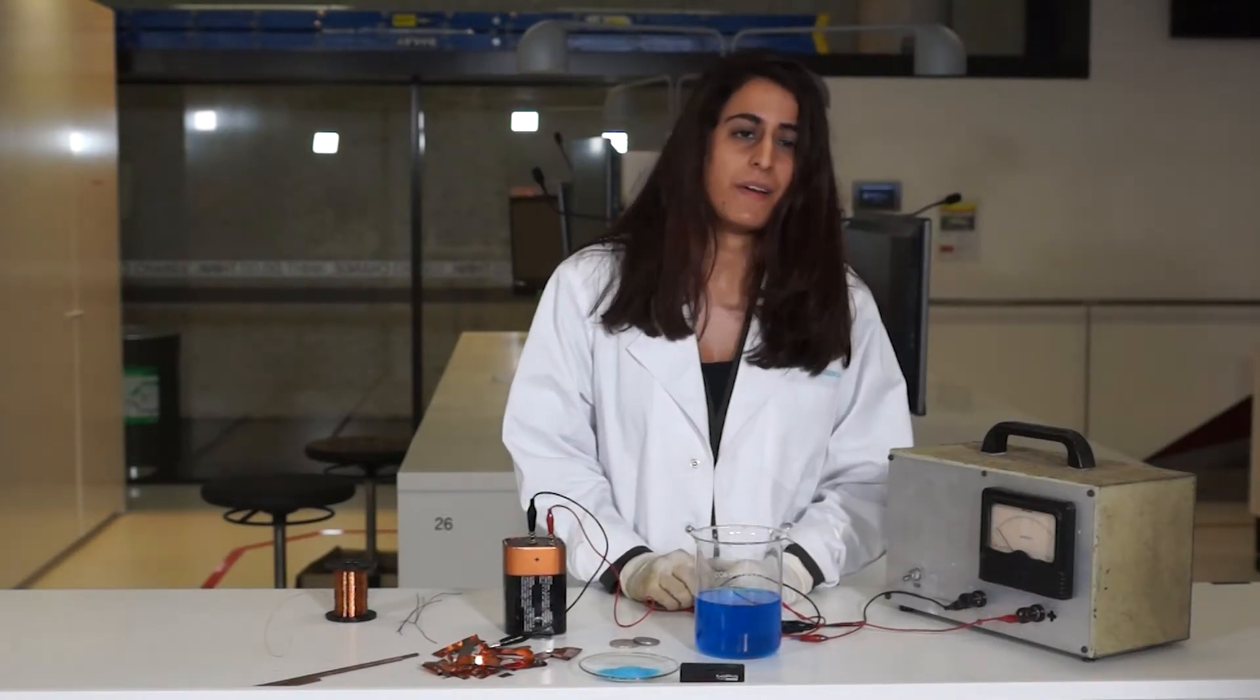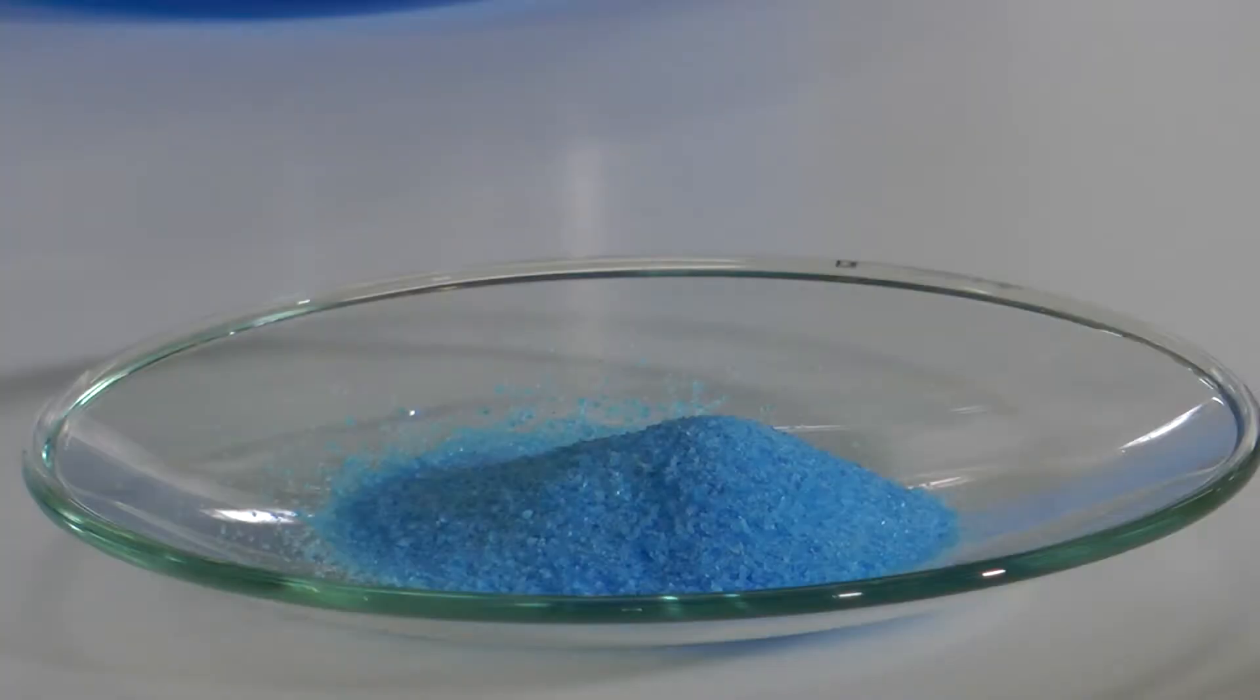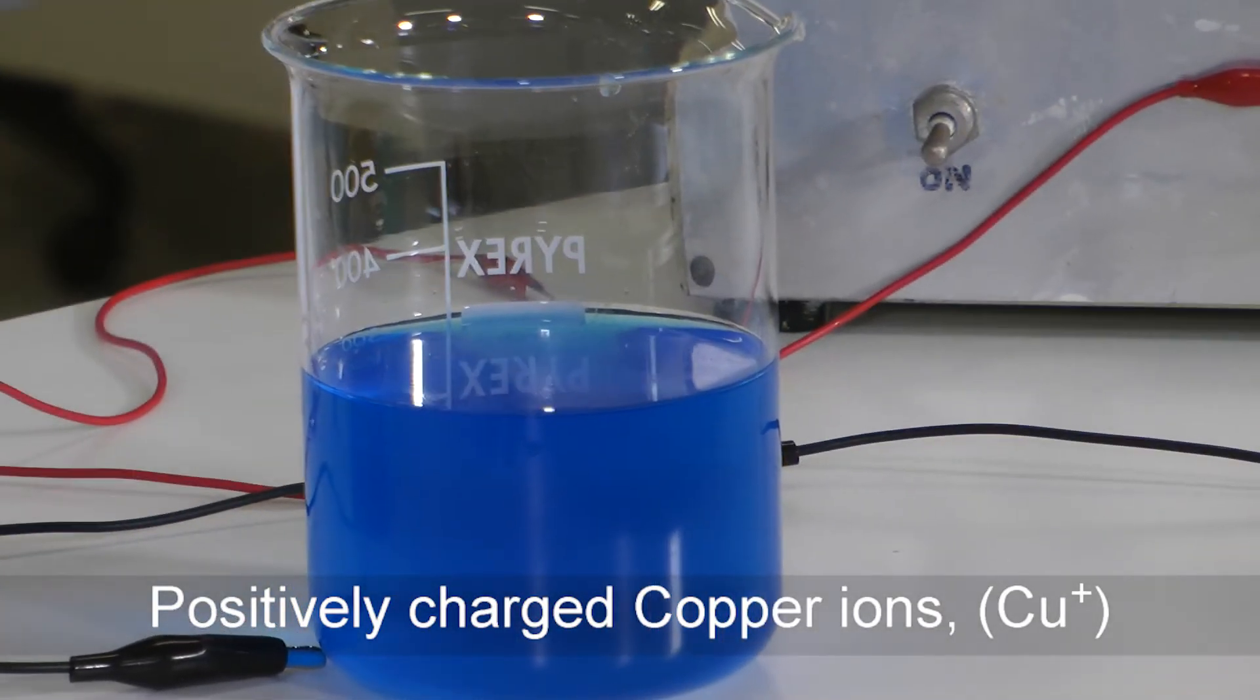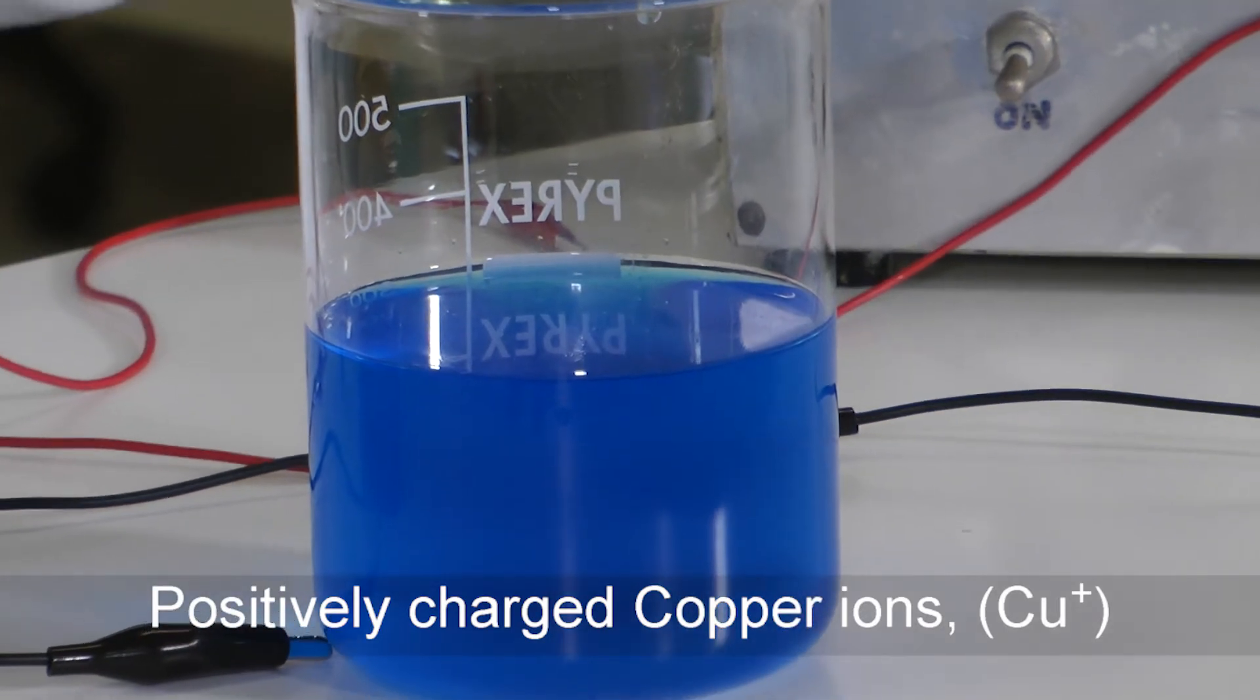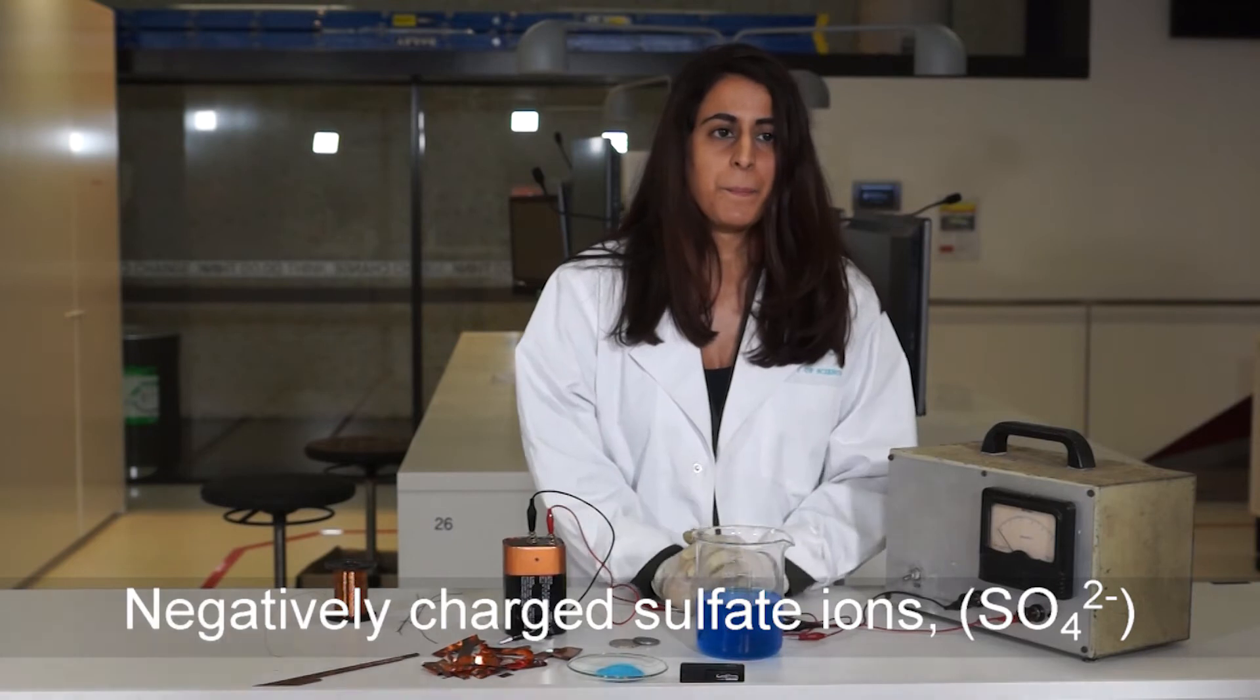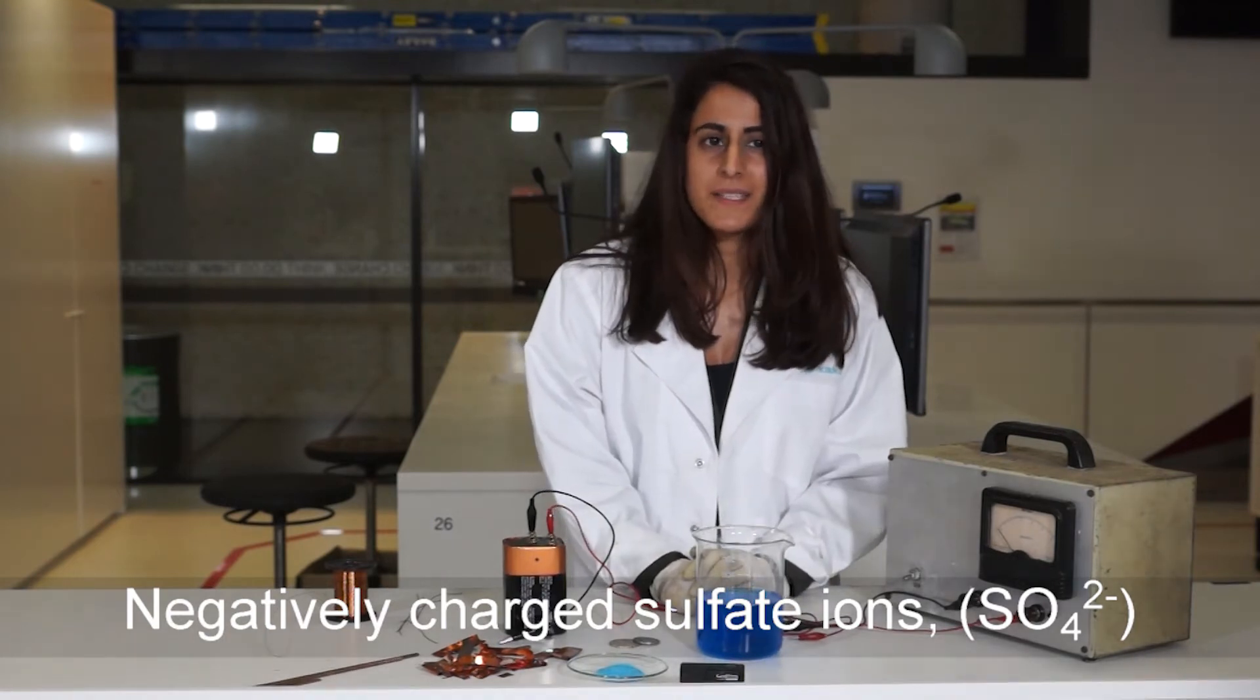And then we need some copper sulfate. You can just get this at hardware stores. And when we dissolve in water, we get positively charged copper ions and negatively charged sulfate ions. We call this the electrolyte.